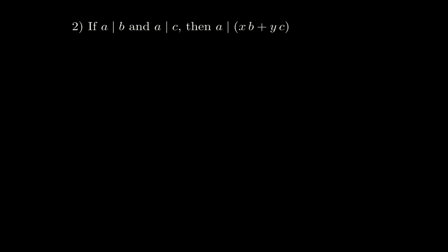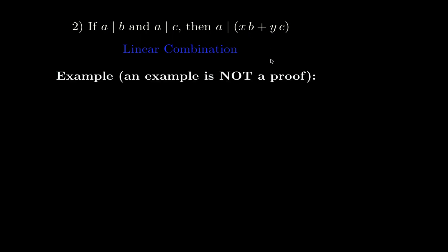Now let's look at the second property — this is the one we're going to prove in this video. The expression xb plus yc is what is commonly called a linear combination of b and c with weights x and y. Again, remember that an example is not a proof.